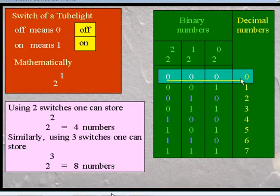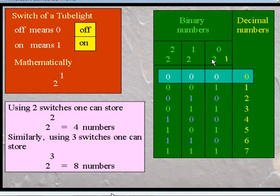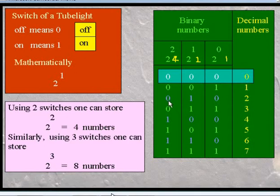This is a very special case: 0 0 0 means all three switches are OFF. In that case, 0 0 0 stands for decimal number zero. Now, the value of the first column is 1, the second column is 2, and the third column is 4. Now observe: what is the value of 0 1 1?